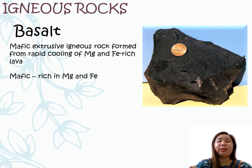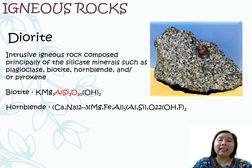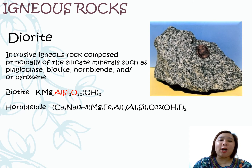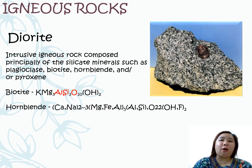Another example of igneous rock is the basalt. It is a mafic-extrusive igneous rock that was formed from the rapid cooling of magnesium and iron-rich magma. The last example of igneous rock is the diorite. Diorite is an intrusive igneous rock composed principally of minerals such as plagioclase, biotite, hornblende, and pyroxene. Biotite and hornblende have specific chemical formulas, meaning this type of rock could contain a lot of elements.